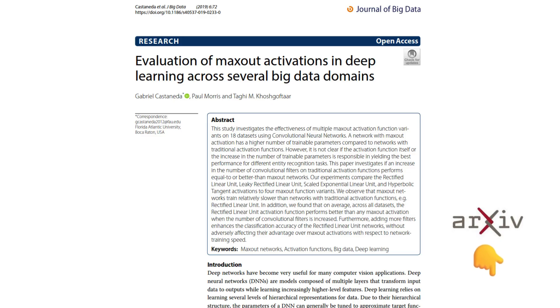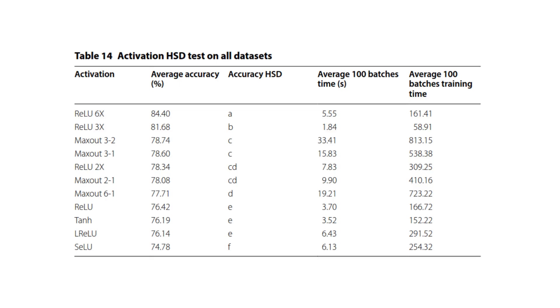A more recent large-scale study of maxout performance in 18 datasets has been done, which showcased the performance of these types of units inside modern deep learning architecture. Eleven activation functions were compared based on their accuracy and processing time. There were 4 total maxout variants being tested and many more ReLU variants.